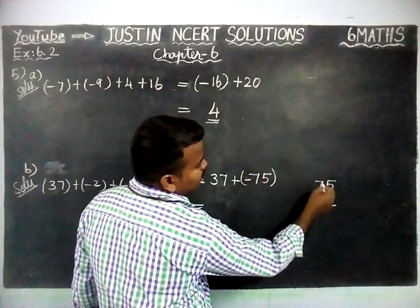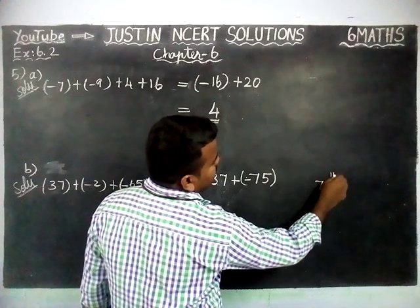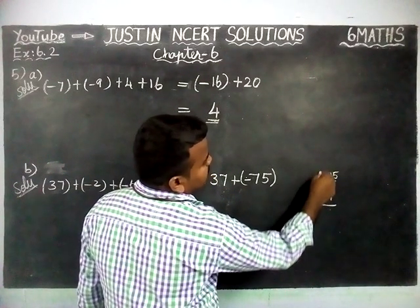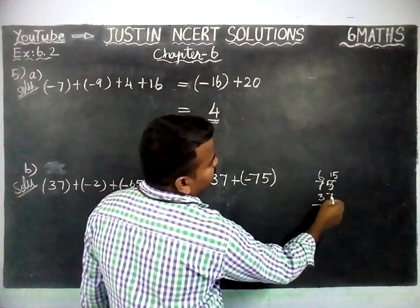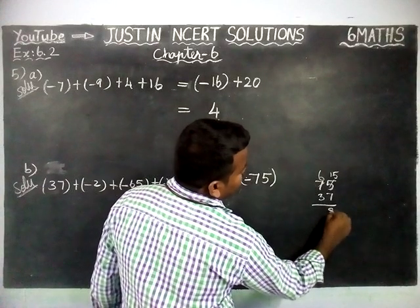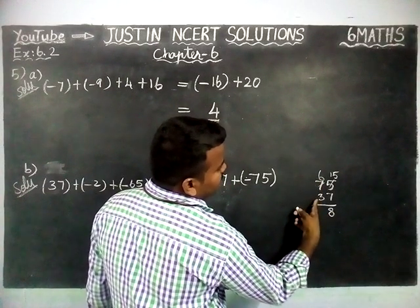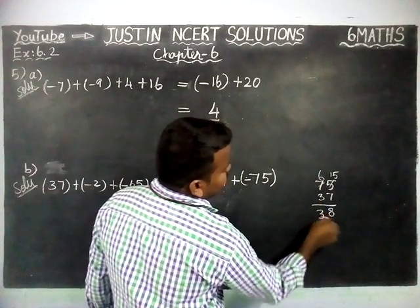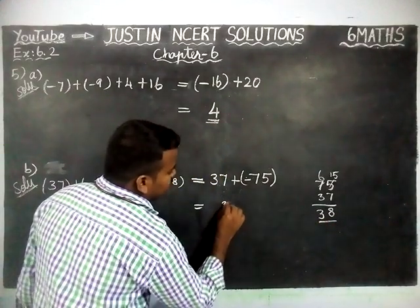Here, 5 minus 7 is not possible. So, from here, we are borrowing. Now, this is 15. This is 6. Now, 15 minus 7 is equal to 8. 6 minus 3 is equal to 3. So, 38.